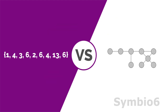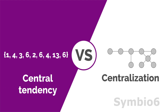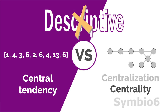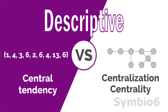In this video we saw that the central tendency of a data set and network centralization are both descriptive statistics — both summarize the set by reflecting the center. Although centralities are not descriptive statistics, there are analogies to be drawn with central tendency. Like mode, median, and mean, different centralization and centrality measurements also have different properties and applications.